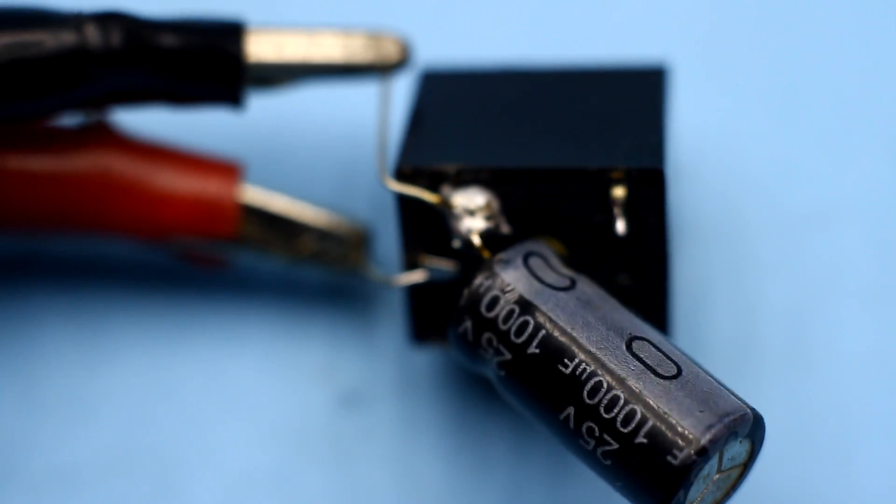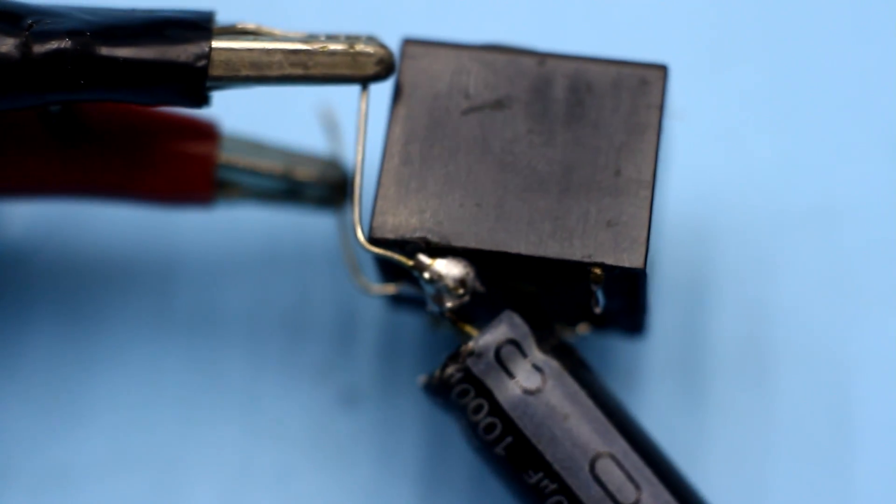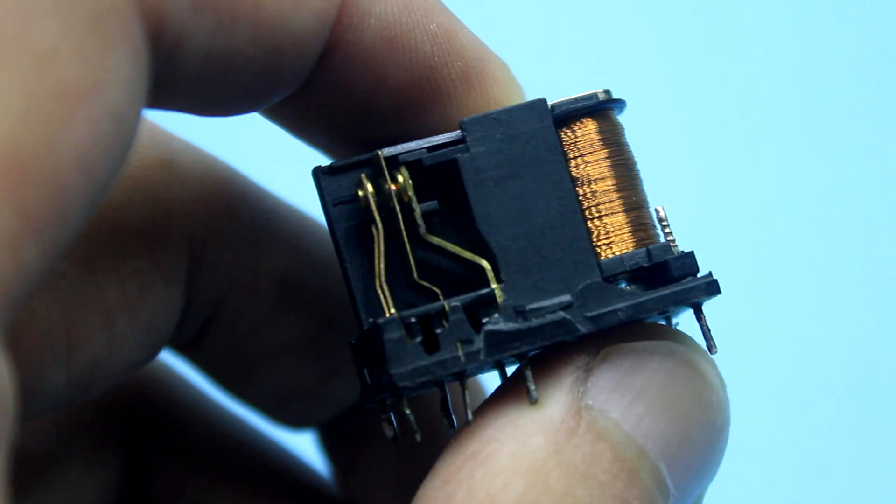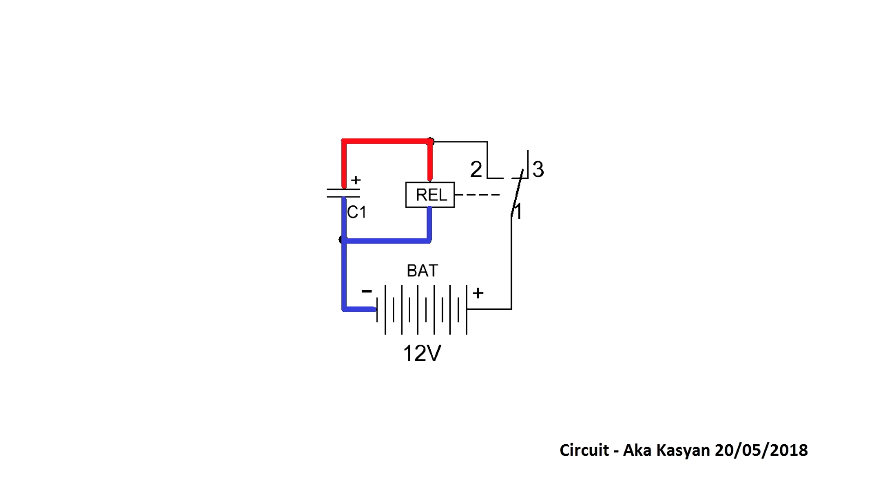Over time, due to discharge of the capacitor, the solenoid of the relay can't hold the contacts in this state, the relay turns off and the contacts return to their original state. Again, the capacitor is charged, the relay is triggered, and the process is repeated. The relay periodically changes its state, turning on and off.